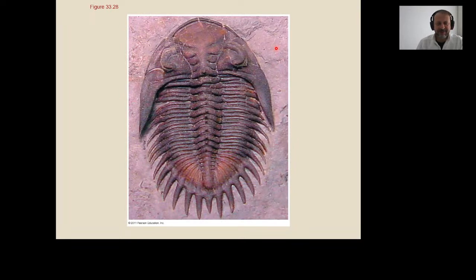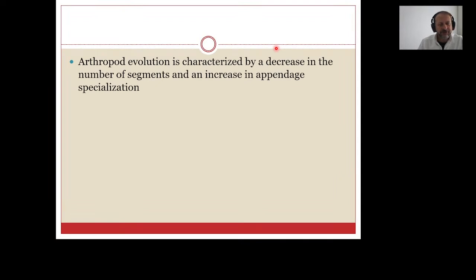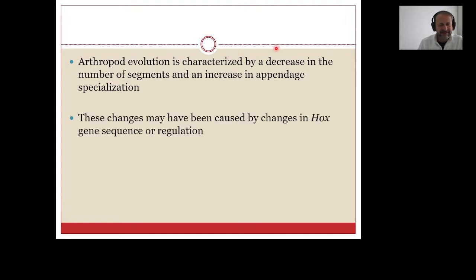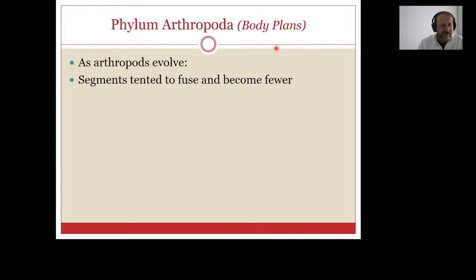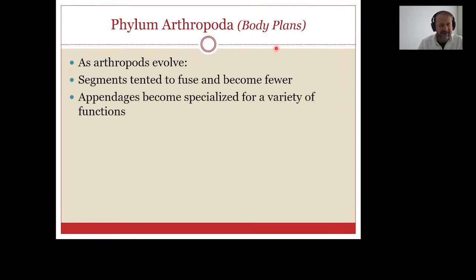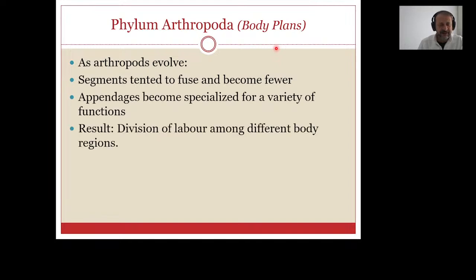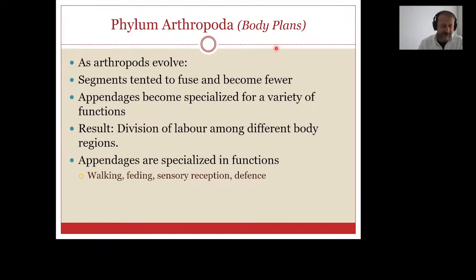This is a trilobite — one of the most commonly seen fossils and an arthropod. Arthropod evolution is characterized by a decrease in the number of segments and an increase in appendage specialization; these changes may have been caused by changes in Hox genes and their regulation. Appendages become specialized for a variety of functions such as walking, feeding, sensory reception, and defense — they are jointed and found in pairs.